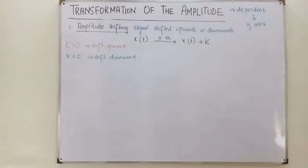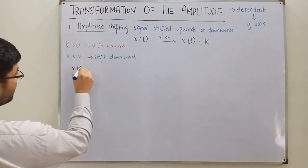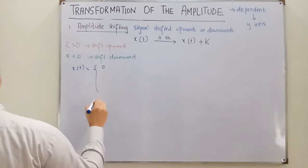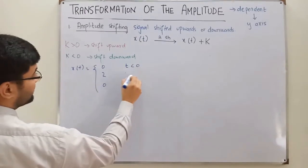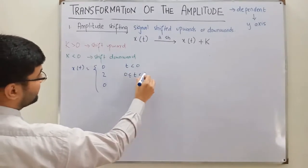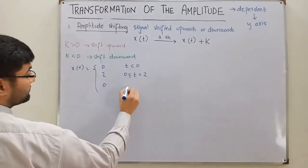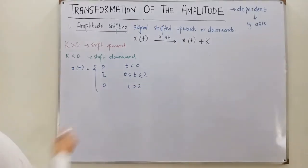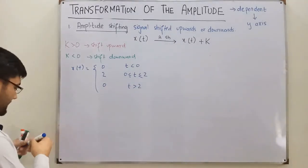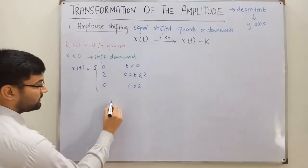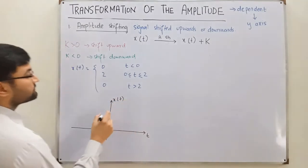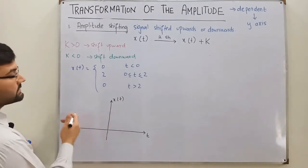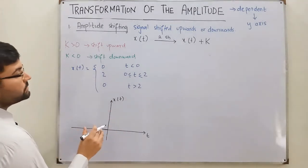Now let's take an example. x(t) is defined as: 0 for t less than 0, 2 for t between 0 and 2, and 0 for t greater than 2. If I draw this function, the x-axis is t and the y-axis is x(t). It is 0 when t is less than 0, then it rises to 2 from 0 to 2.